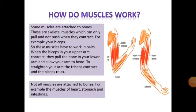How do muscles work? Some muscles are attached to bones. These are skeletal muscles, which can only pull and not push when they contract. For example, your front upper arm muscles are called biceps and back upper arm muscles are called triceps. These muscles have to work in pairs. When the biceps in your upper arm contract, they pull the bone in your lower arm and allow your arm to bend. To straighten your arm, the triceps contract and the biceps relax. In this way, both biceps and triceps work in pairs.